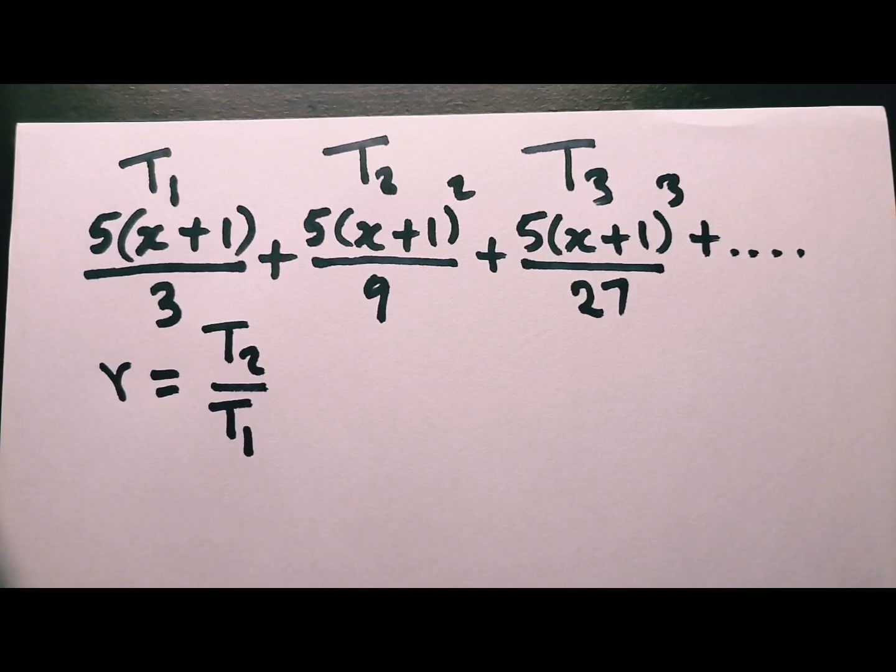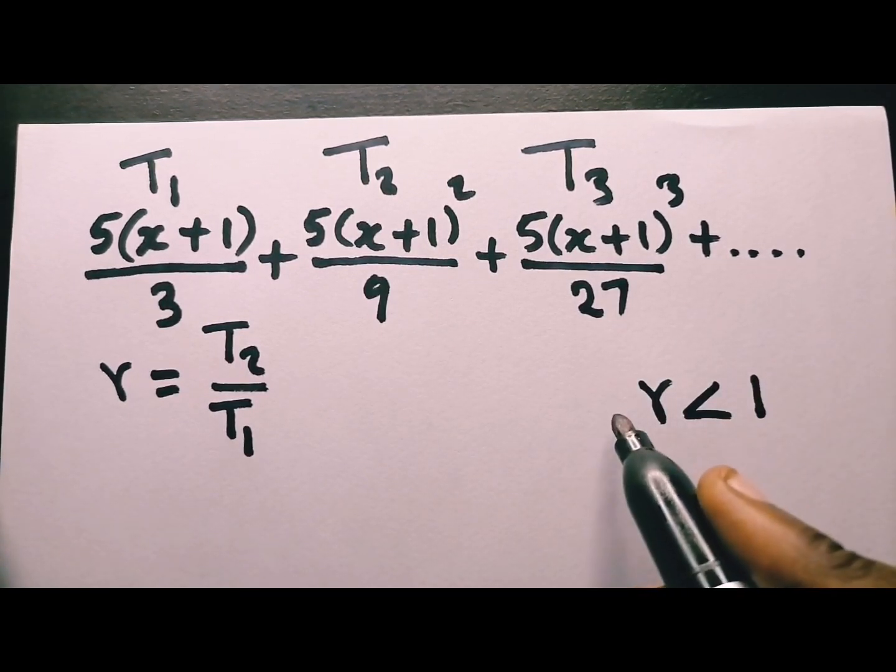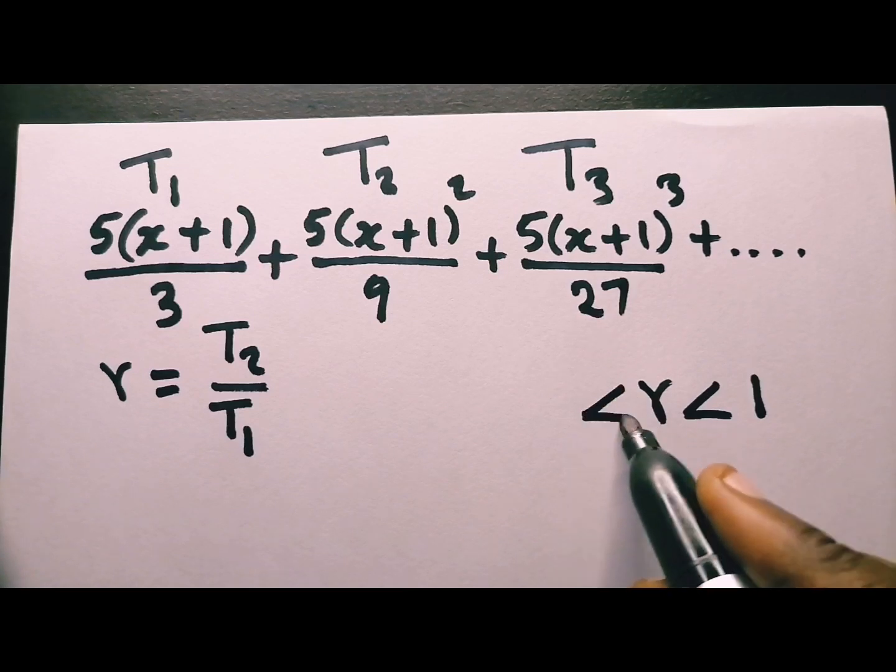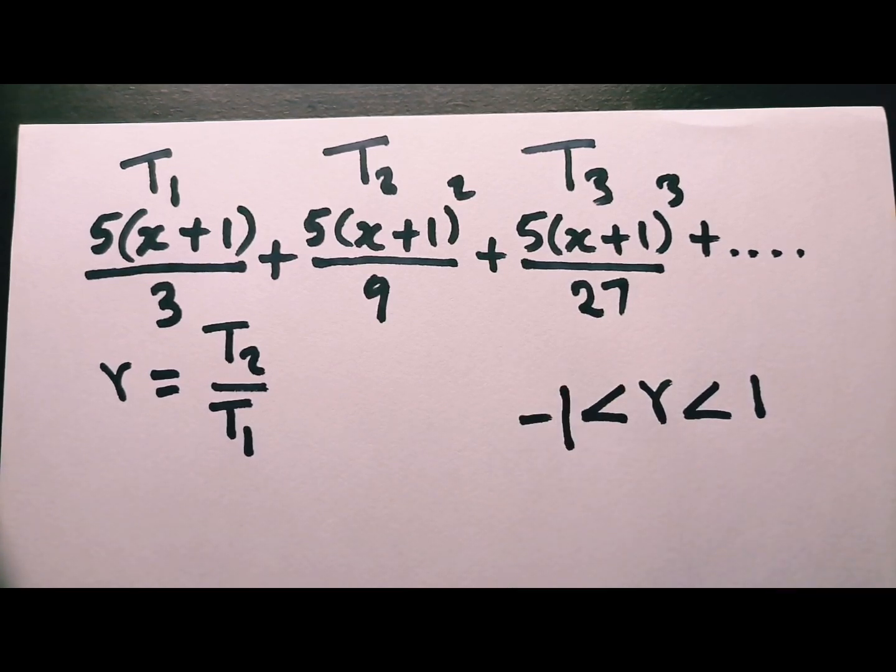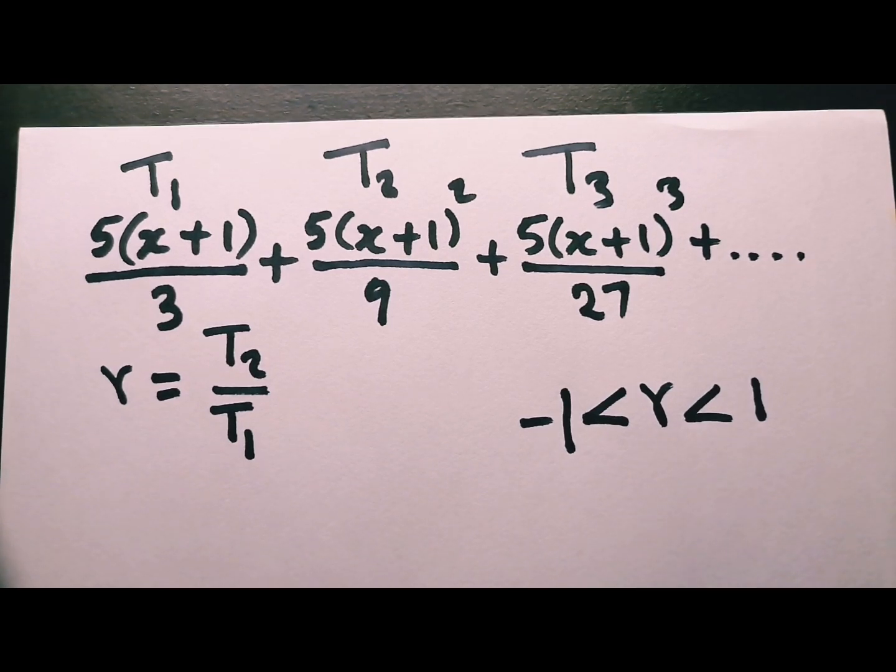Looking at the first question, they said determine the values of x. And they sent you a message here, convergent. Convergent means your r is going to be less than 1, but greater than negative 1. This is the condition that makes the sequence or the series converge.